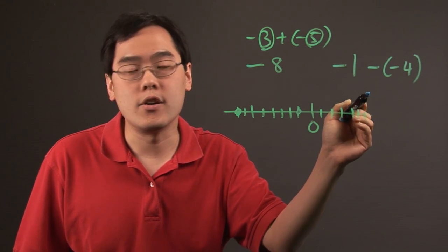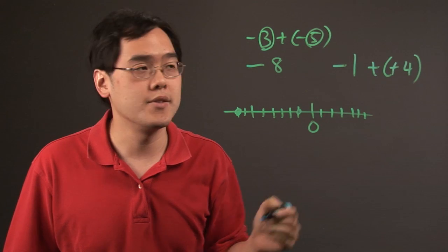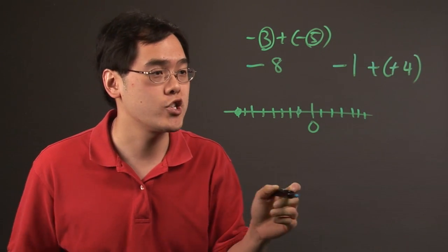But what you have to keep in mind here is that when you have two negative signs, you're going to have a positive. So negative 1 plus 4, you're actually subtracting. And here's the rationale.